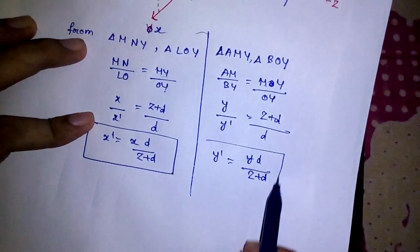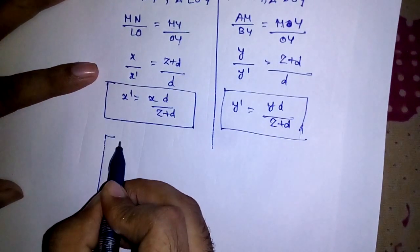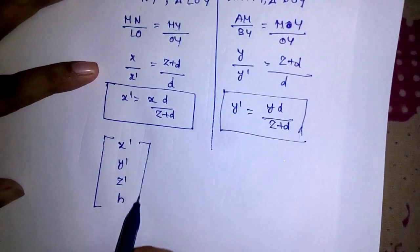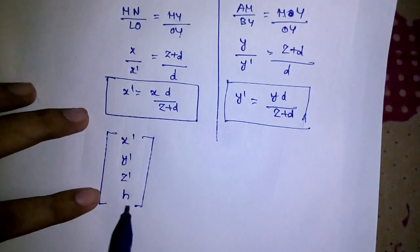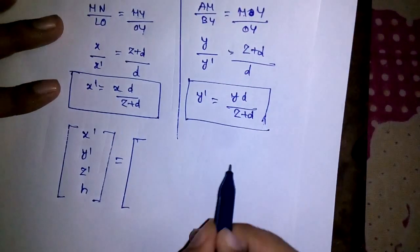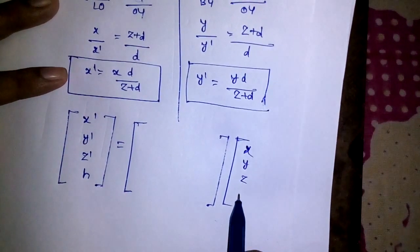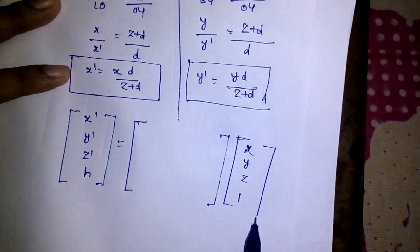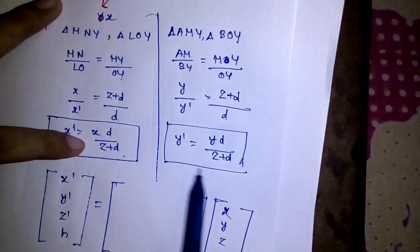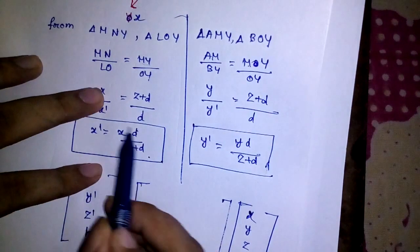Now I need to form a homogeneous matrix from this. Let's write out X-dash, Y-dash, Z-dash, and I am taking H here — unlike in previous videos where I was taking 1, in this video I am taking H, and the reason will be clear in a moment. This transformation matrix acts on the old coordinates X, Y, Z, 1. If I ignore the division by (Z+D) for now, we consider X·D and Y·D.